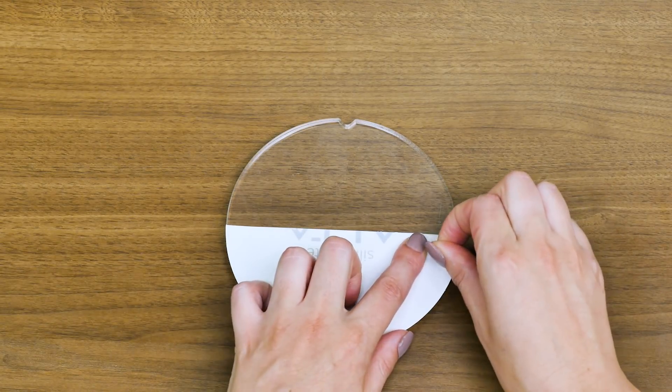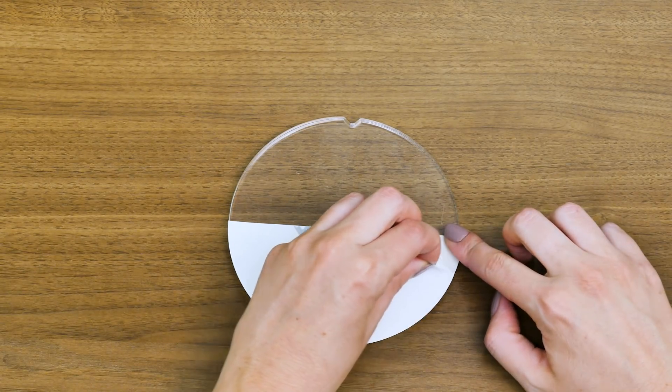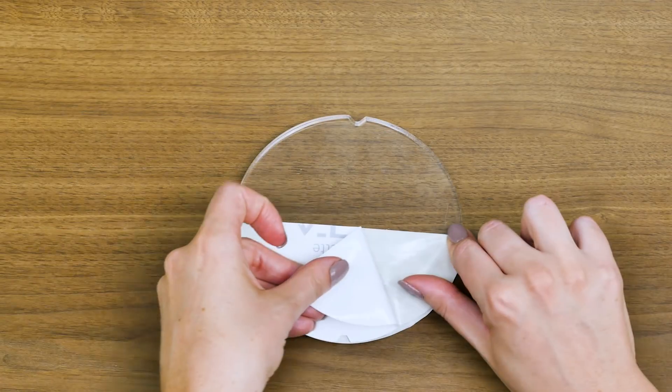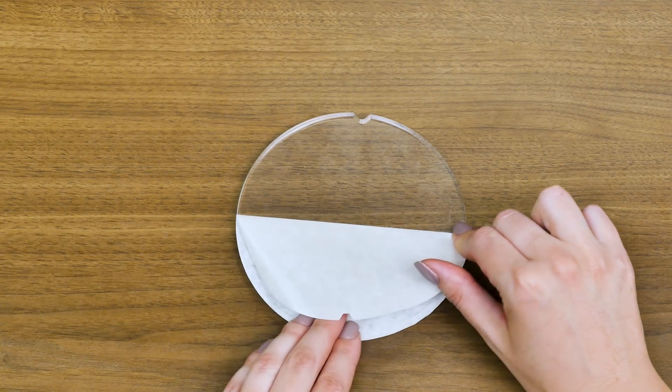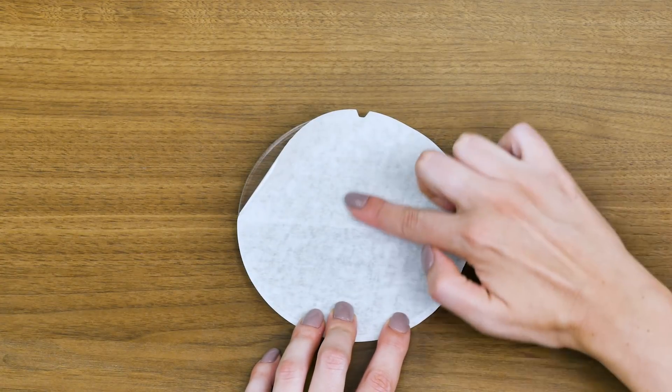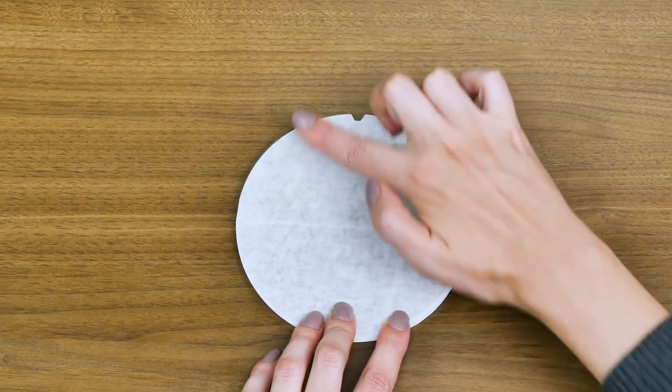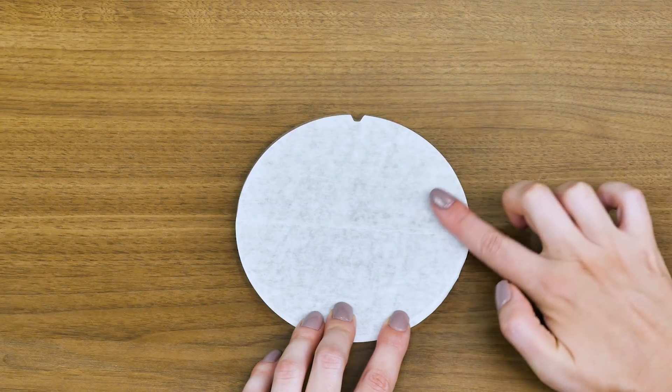When it is applied to the platform, remove the other half of the liner and rub the remaining tape in place. Again, make sure there are no air bubbles or creases.